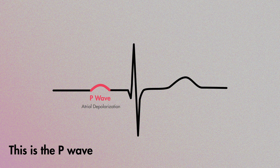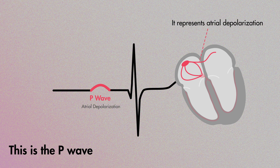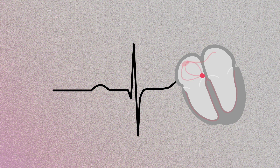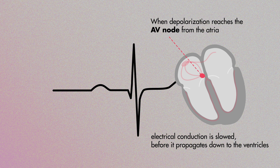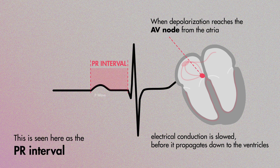This is a P wave, which represents atrial depolarization. When atrial depolarization reaches the AV node from the atria, electrical conduction is slowed before it propagates down to the ventricles. This slowing of electrical conduction is seen here as the PR interval.